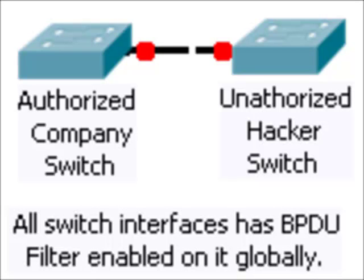Cisco Packet Tracer was created for CCNA students and does not possess the ability to simulate the BPDU filter command on its virtual switches. But by the magic of video manipulation, I am going to demonstrate what you might see if it did support the command. We are looking at two switches: the left device is an authorized company switch and the right device is an unauthorized hacker switch. Let's pretend that we have already configured port fast and BPDU filter globally on the authorized company switch.